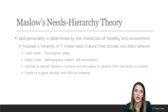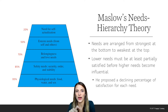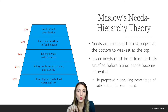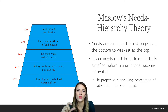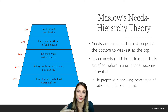These needs enable us to grow, develop, and become the best version of ourselves. Maslow arranged these five needs in a hierarchy, from strongest at the bottom to weakest at the top. Lower needs must be at least partially satisfied before the next level up becomes influential — becomes the dominant force. Going along with this, he proposed a declining percentage of satisfaction for each need.